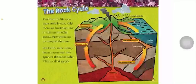The rock cycle. Our earth is like one giant rock factory. Old rocks are breaking into smaller and smaller pieces. New rocks are forming all the time. On earth, some things happen over and over again in the same order — this is called a cycle.